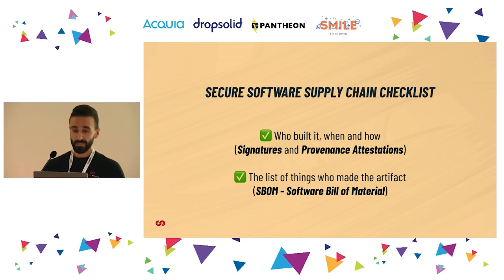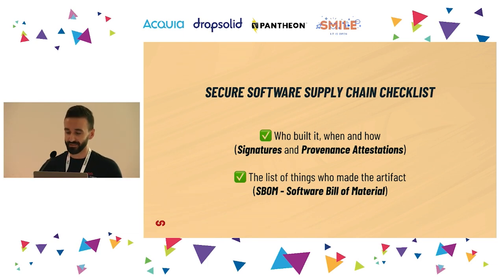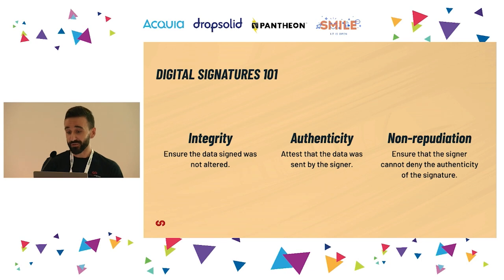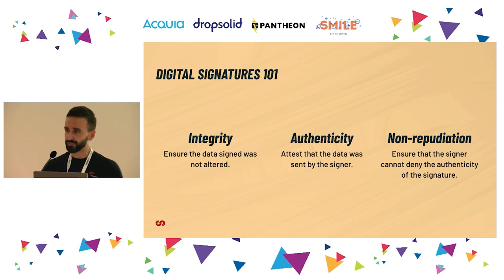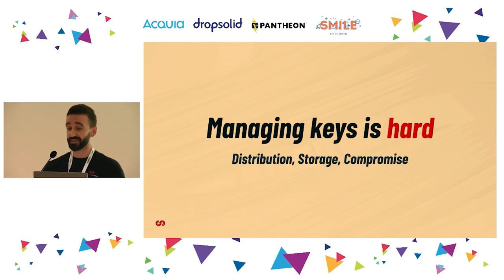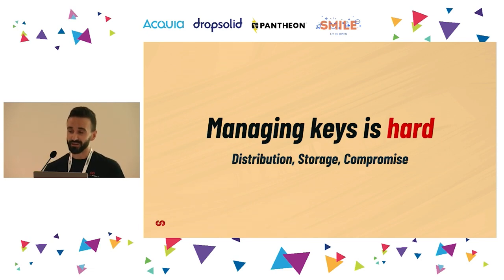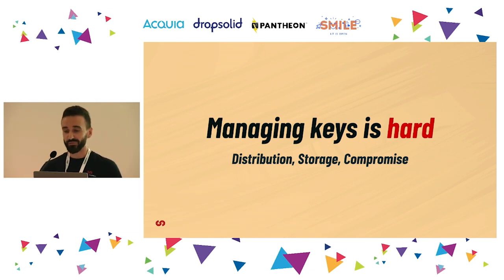We also need to know the list of things that made the artifact — like the list of ingredients we require when we buy food. Using digital signatures with key pairs, we can solve the first set of problems: they ensure integrity, authenticity, and non-repudiation — the key elements to building trust between actors. But the problem is that managing keys is very hard. We have to distribute keys to our users, keep our private key in secure storage, and when compromised — not if — inform all involved users to use the new key and deprecate the old one. This is why digital signatures are not yet widely used by developers, even though they have existed for decades.